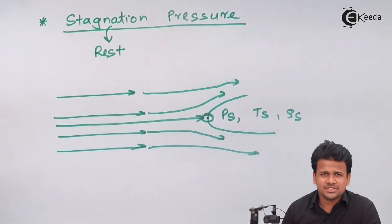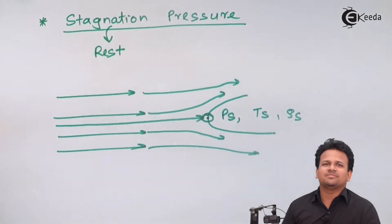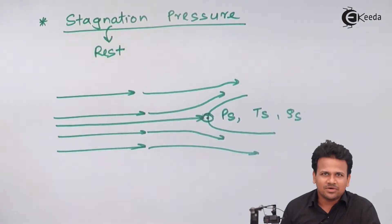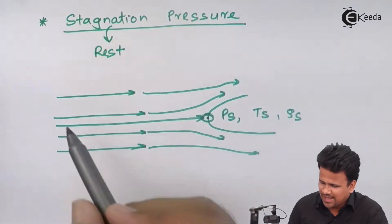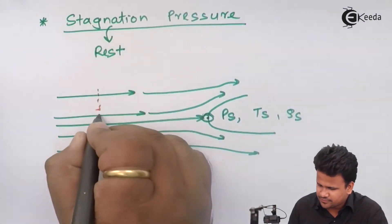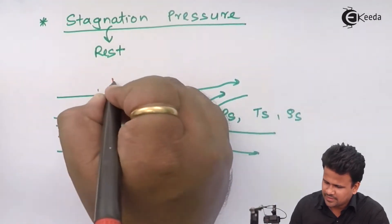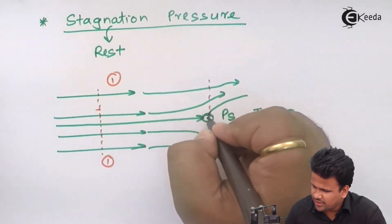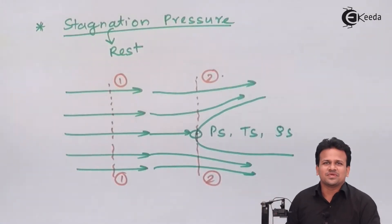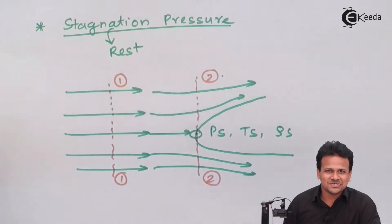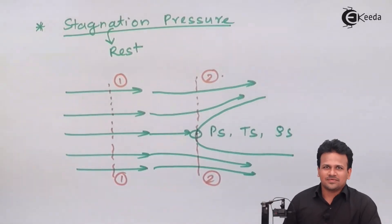Why do we calculate stagnation density? Because we are in compressible fluid flow, and in compressible fluid flow the density of the fluid changes. If we consider section 1-1 upstream and section 2-2 at the stagnation point, then at section 2 the velocity v₂ will be zero, because the fluid comes to rest at the stagnation point.